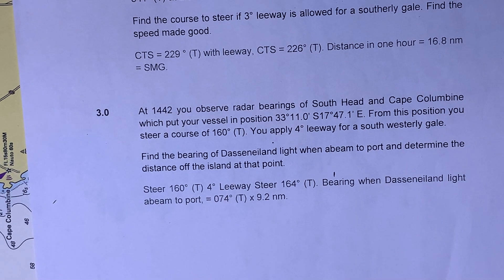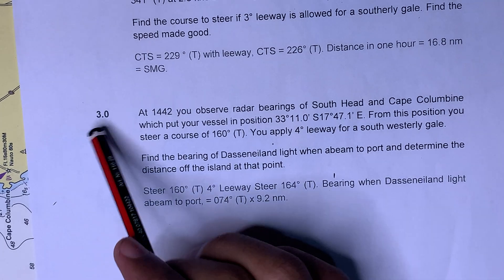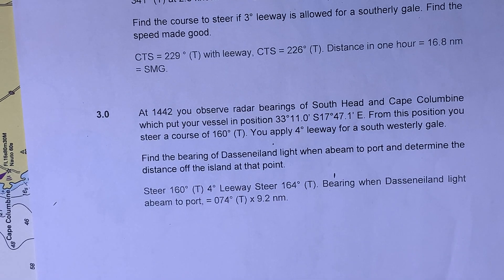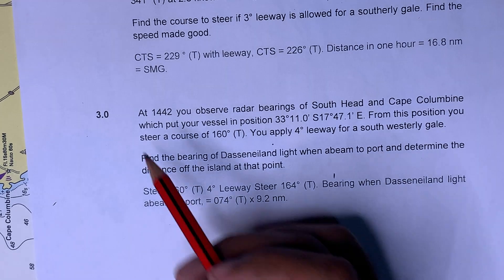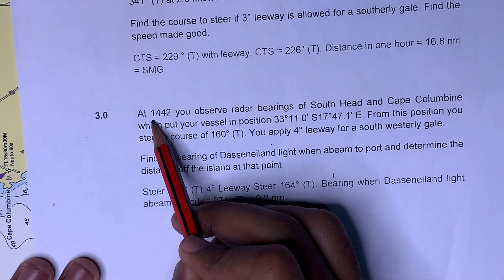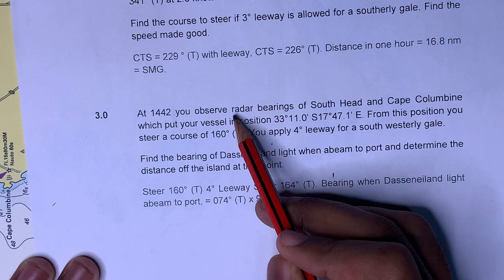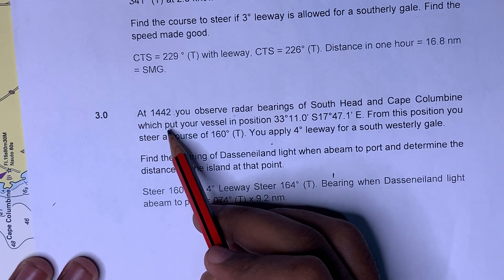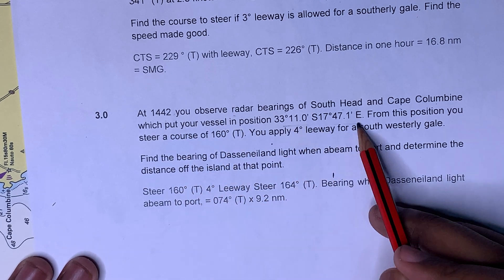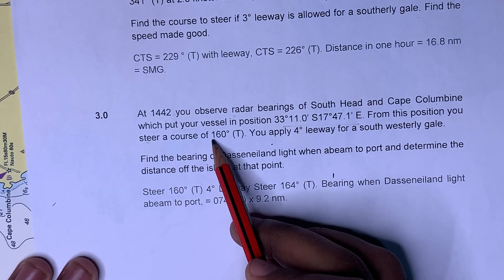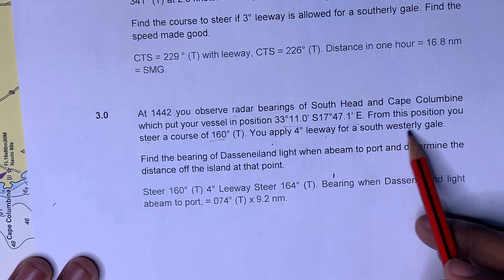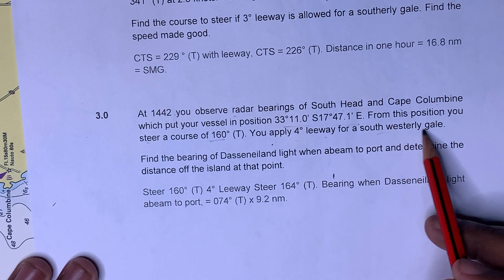Okay, let's try to look at the problem. This is problem number 3. Let's try to tackle it. At 1448, you observe a radar bearing of South Headlight and Cape Columbian, which puts your vessel at this position. From this position, if there is a course of 160°, you apply a leeway from a 40-degree leeway from a south-westerly gale.